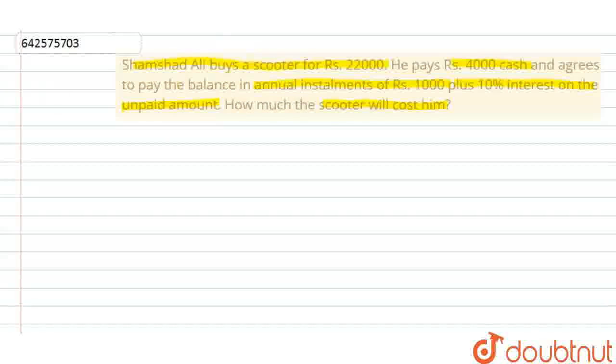So here some information is given that Shamshad buys the scooter for Rs. 22,000. The scooter cost is in total Rs. 22,000. Now, down payment he has done, that is already he paid in cash, is Rs. 4,000.